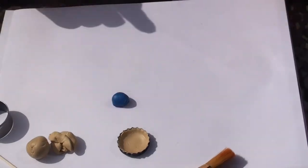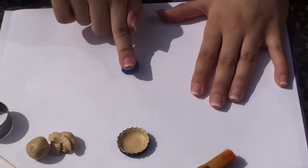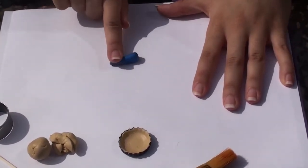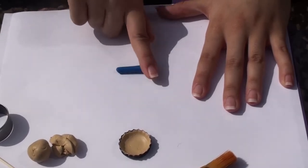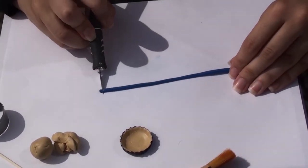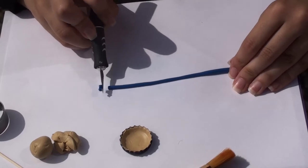Next we'll be making the filling of the pie. Roll out some blue clay into a thin snake and using the exacto knife cut small evenly sized pieces from the snake and roll them into balls. These will be your blueberries.